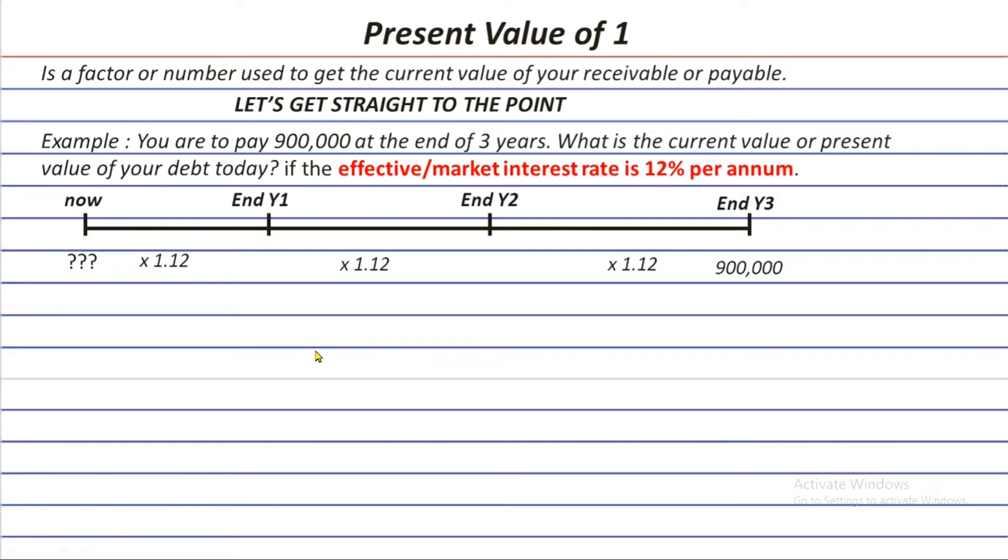So, what do we do? If you have this already, then you just have to work back from here. 900,000 divided by 1.12 instead of multiplying because again, we are working in reverse. The answer will be 803,571, rounded to the nearest whole number.